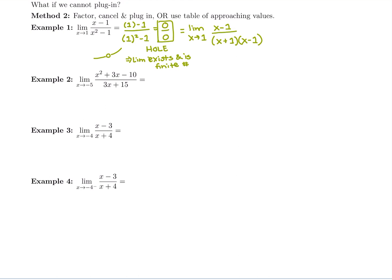After factoring, we cancel — the x minus 1 terms cancel. Be careful: the numerator doesn't go away entirely; we put a 1 in the top to hold its place, and in the denominator we have x plus 1. Now can we plug in? We get 1 over (1 plus 1), which gives us one-half as our final answer. So if you get 0 over 0, that's a good indication you should be able to factor, cancel, and plug in to get a regular number.